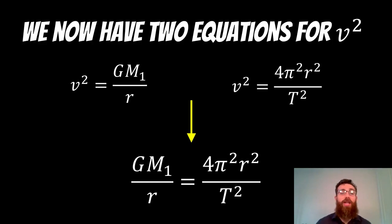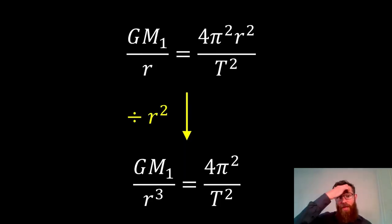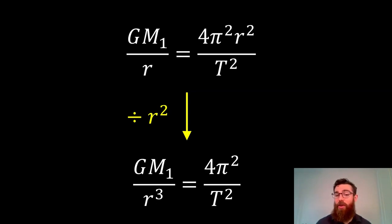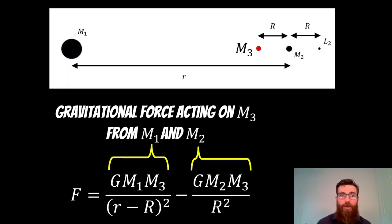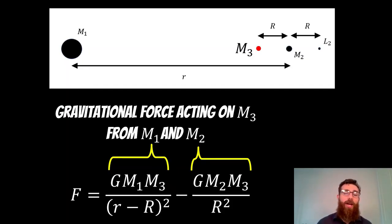If we then divide by R squared, we can remove R from the right-hand side, leaving the orbital period on the right-hand side. Now, placing a new object M3 — a small negligible mass — between M1 and M2, it receives a gravitational force from both objects. We can write its total gravitational force where the first part is due to M1 and the second part is due to M2.